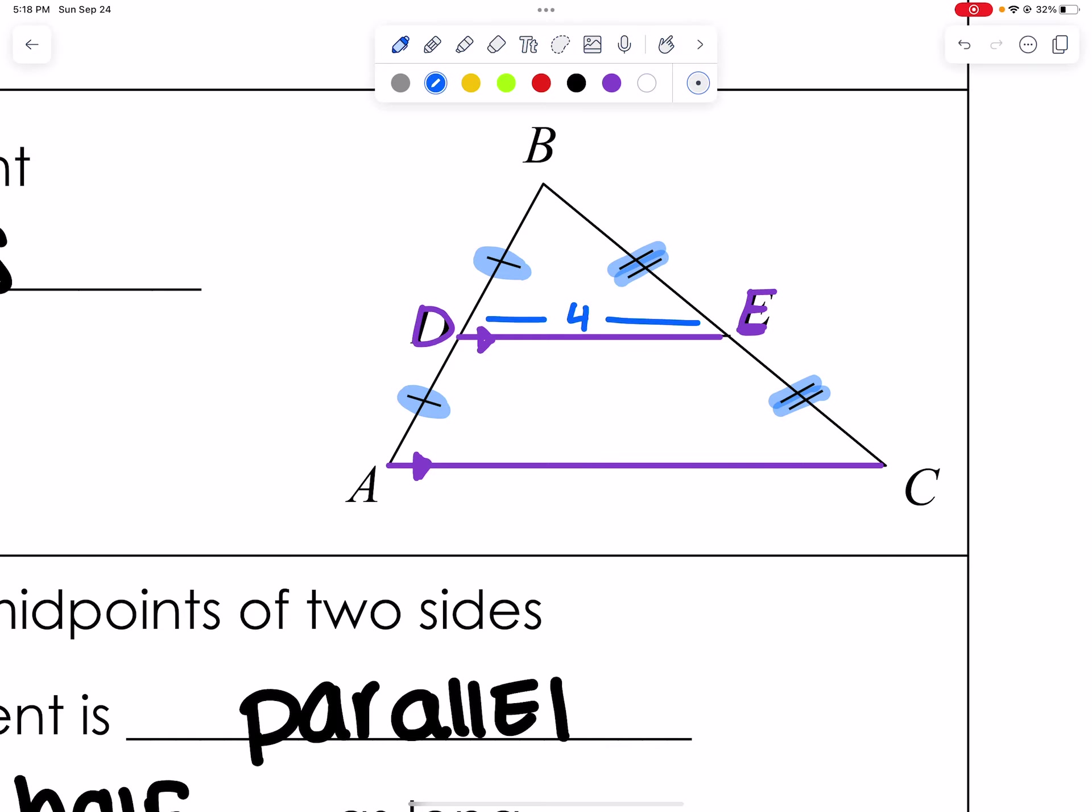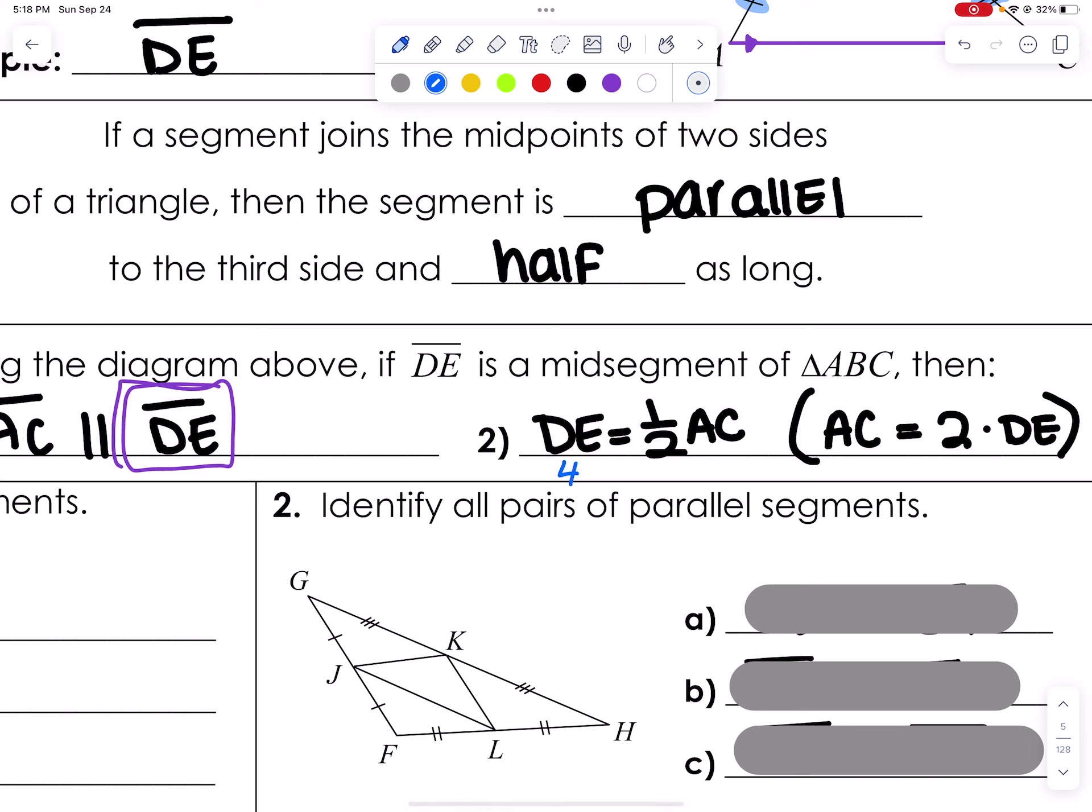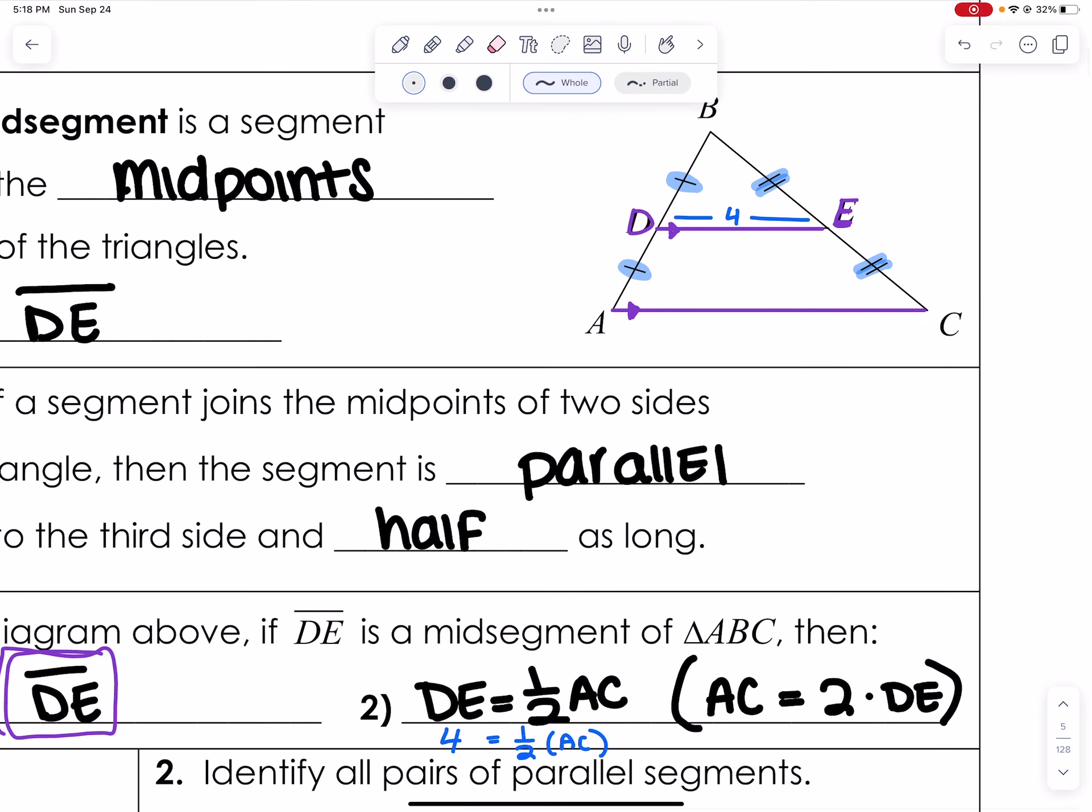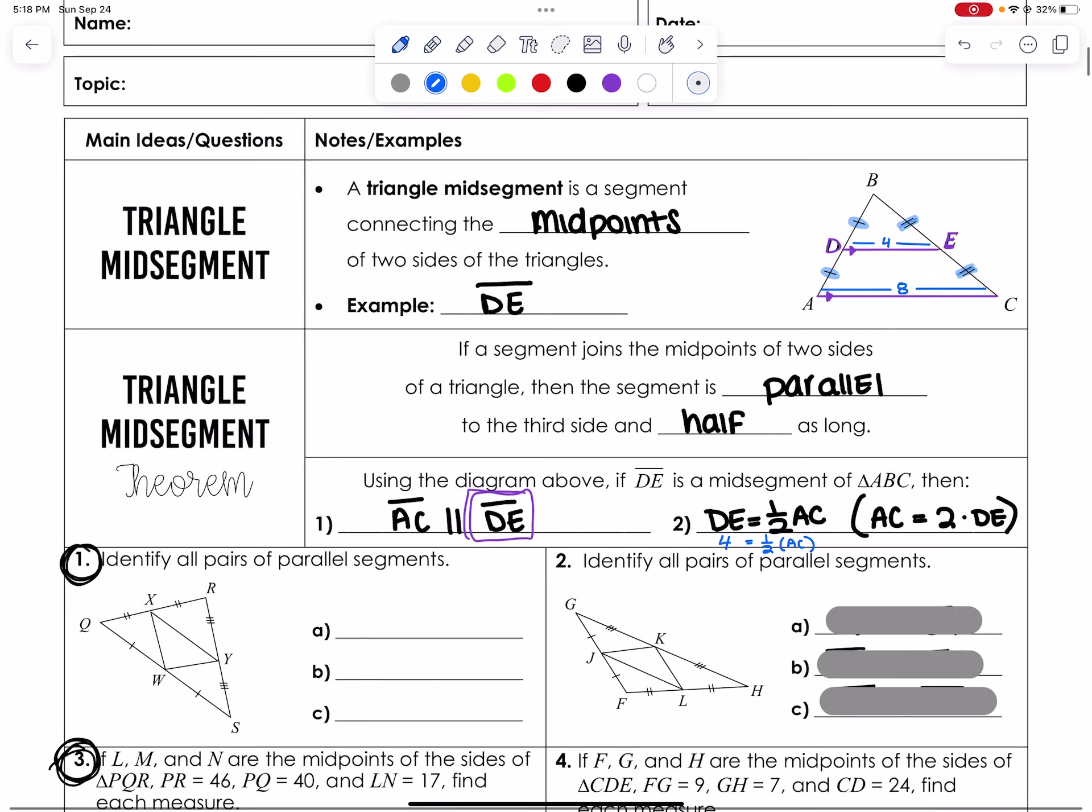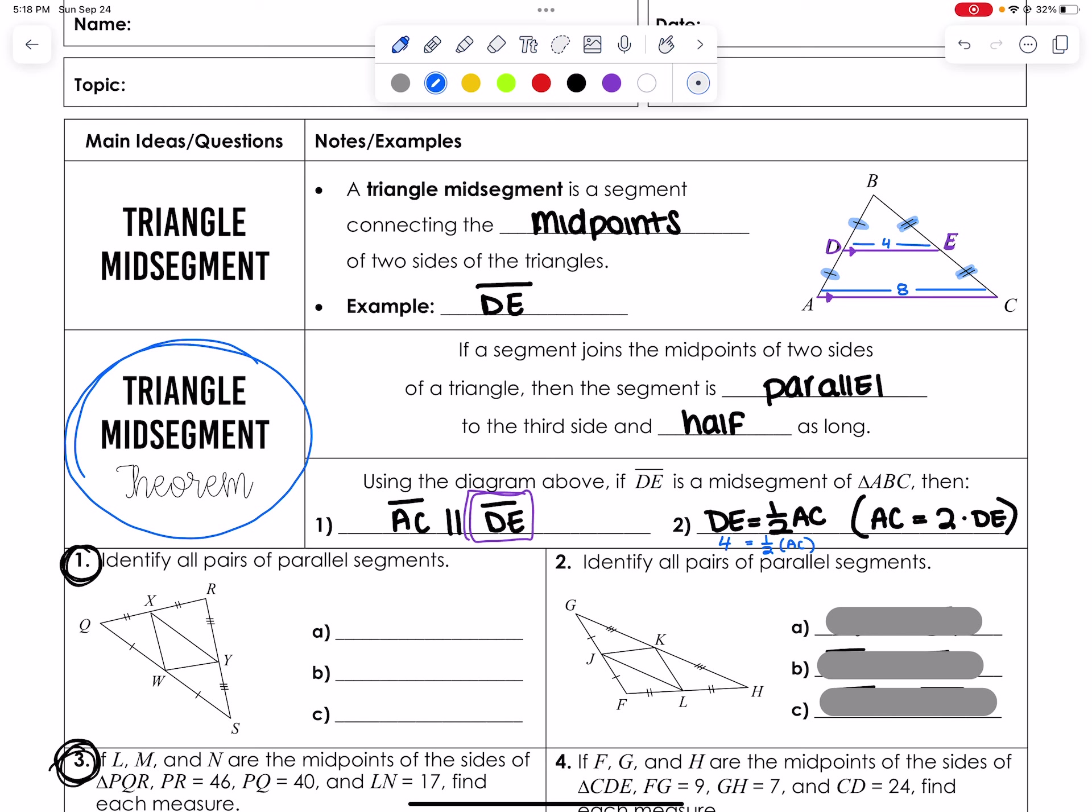If the length of DE is 4, let's say I put that here, DE is one half of AC, right? That means AC would have to be which value? If you said 8, good job. That's what we have to remember when it comes to triangle midsegment theorem. That the midsegment is parallel to the line opposite it, and that the midsegment is half of the line that it is also opposite, that parallel line.